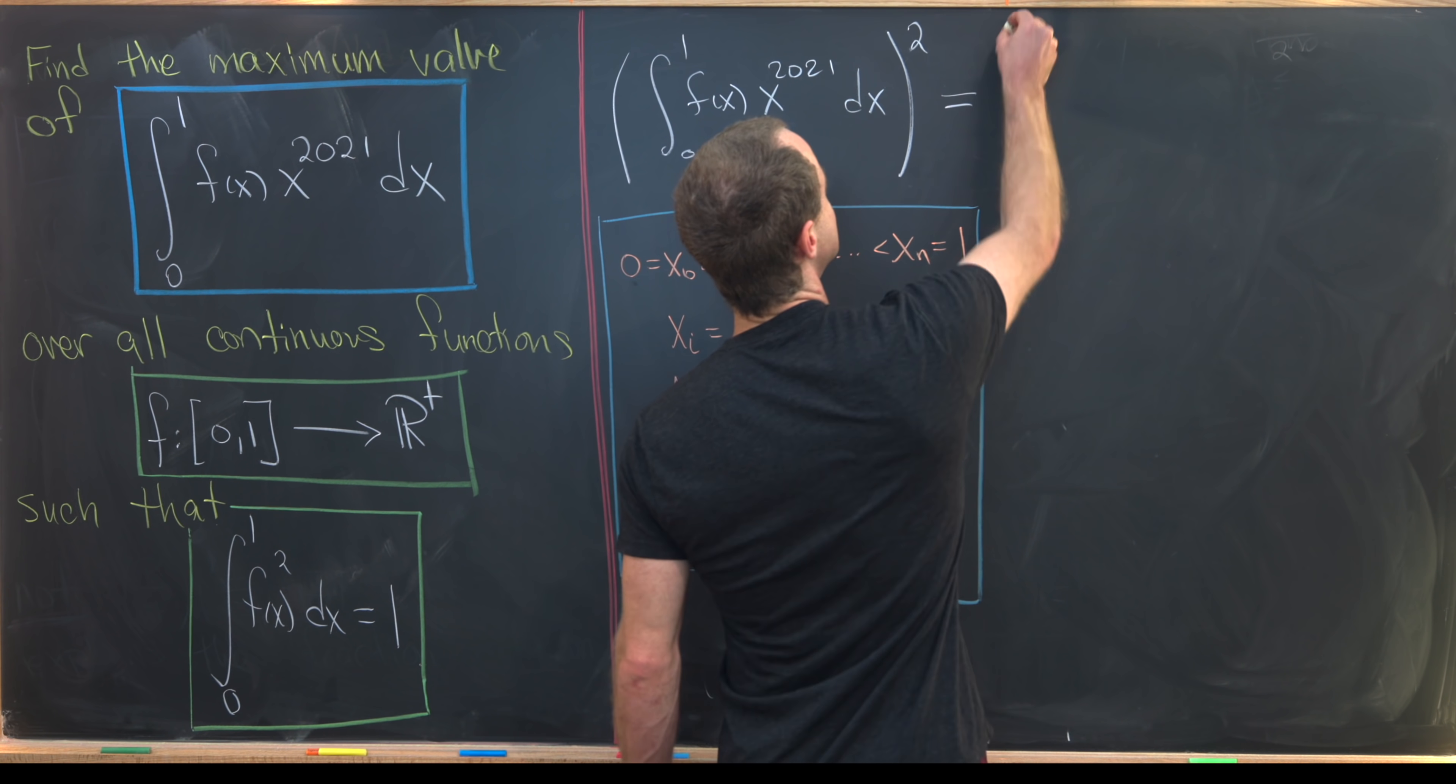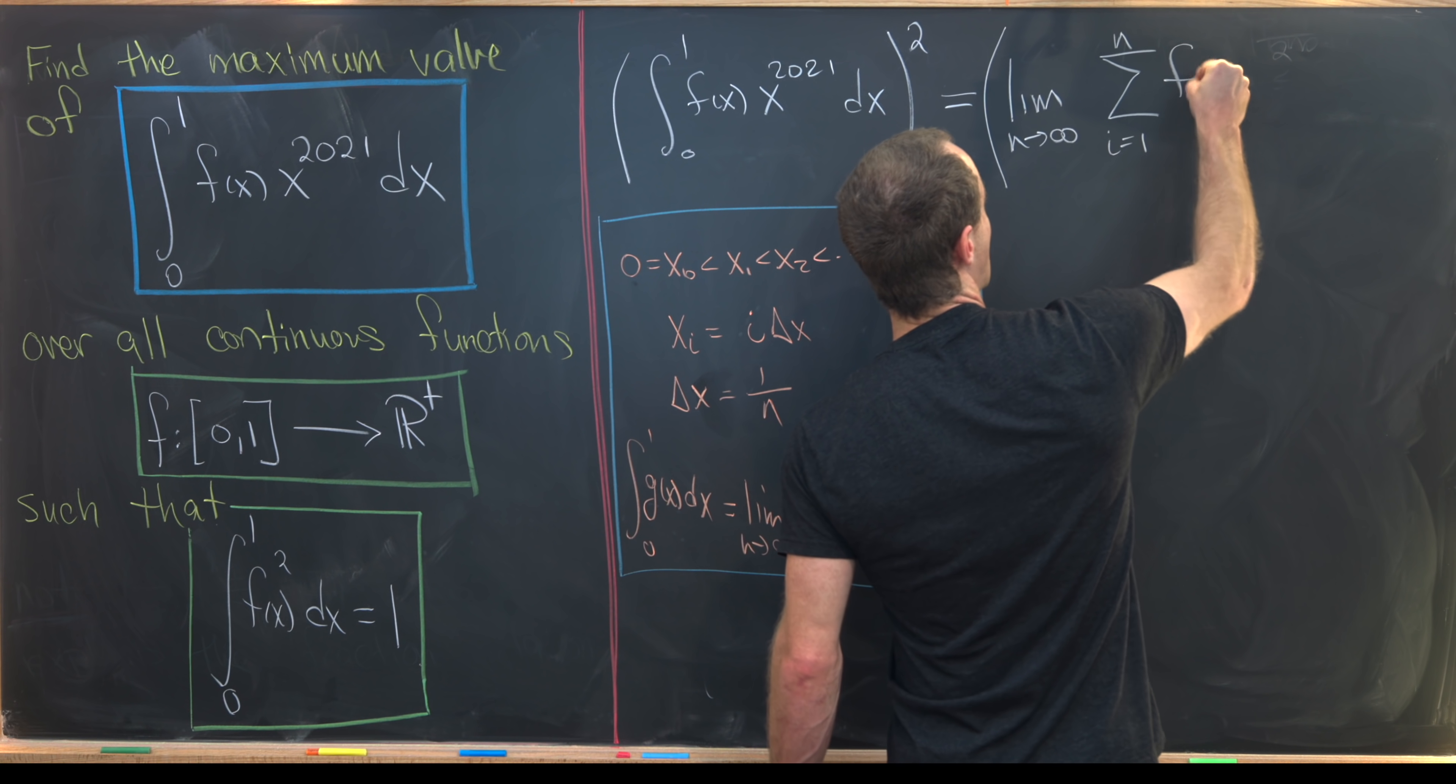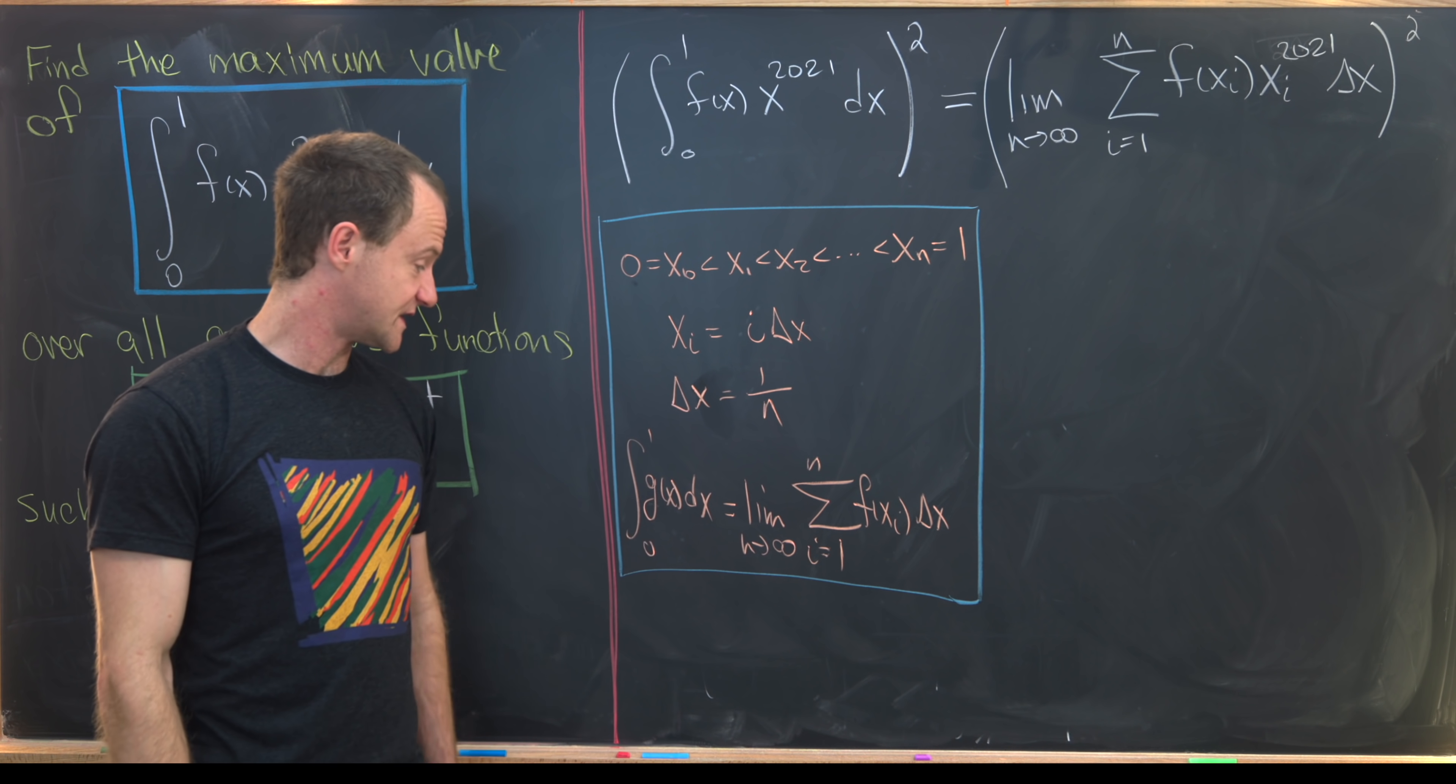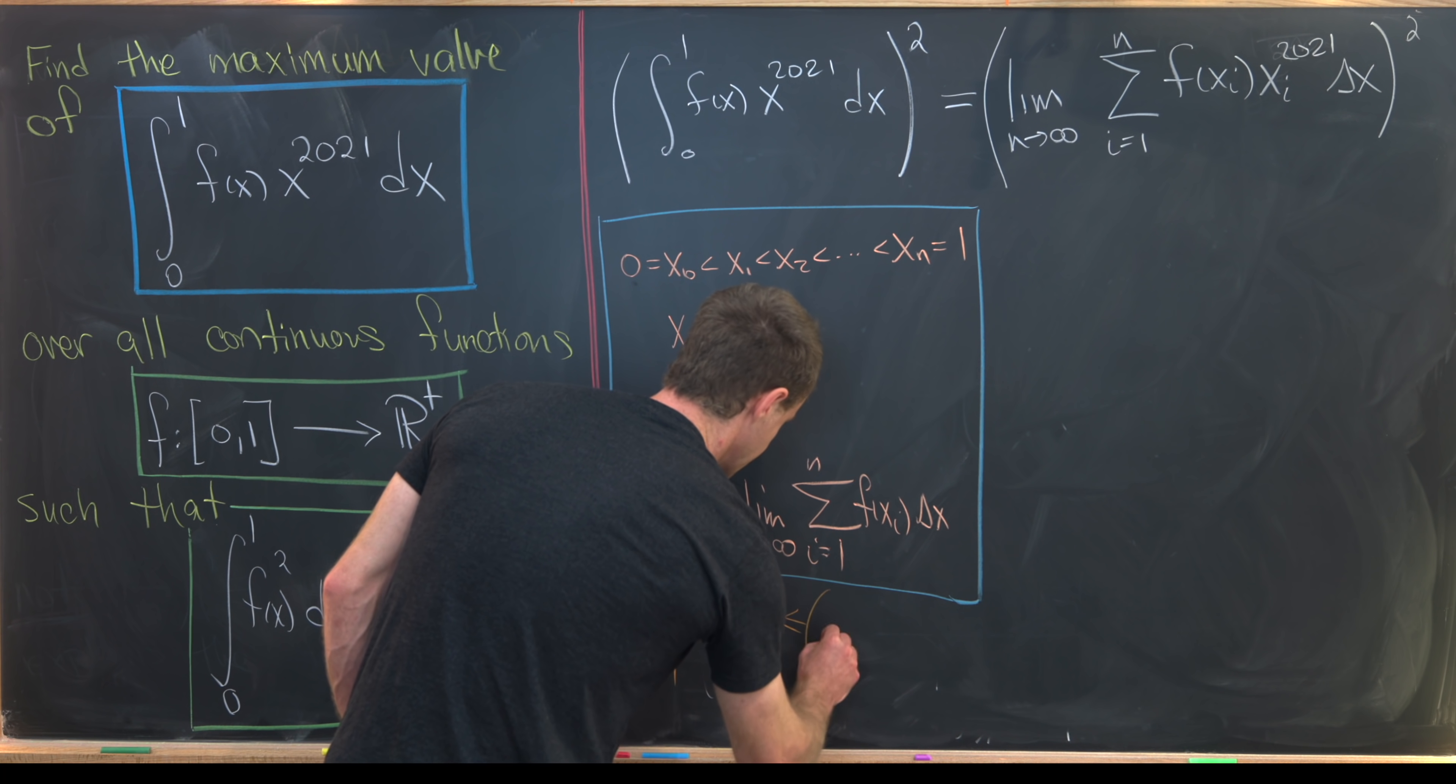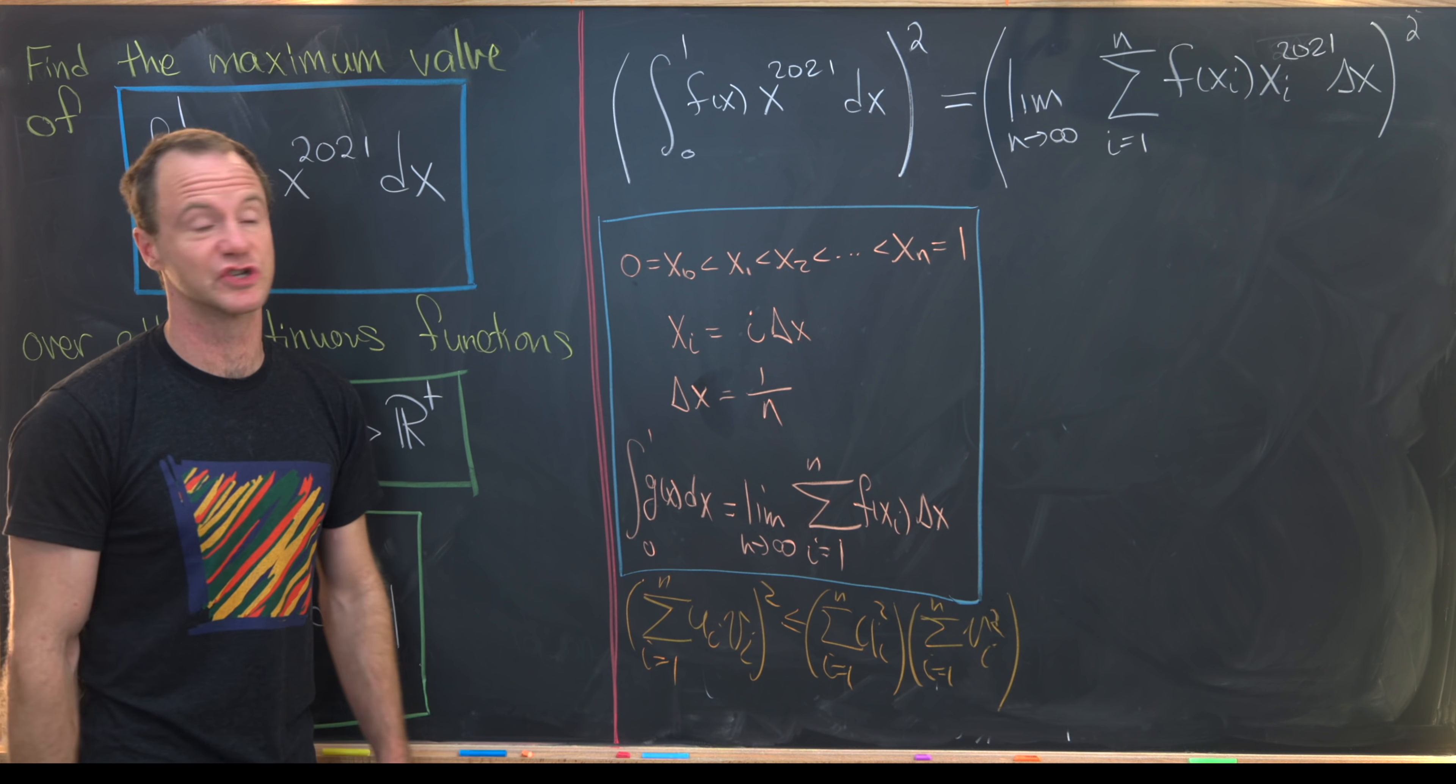Let's see what that gives us. This is going to be the limit as n approaches infinity of the sum as i goes from 1 up to n of f(xi) times xi to the 2021 times delta x, and this is all being squared. But now the Cauchy-Schwarz inequality for series says something like this: If we're taking the sum as i goes from 1 up to n of ui vi squared, that's going to be less than or equal to the sum as i goes from 1 to n of ui squared times the sum as i goes from 1 to n of vi squared. But now since we've rewritten our integral as a sum, we can apply this orange result immediately.